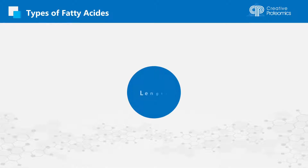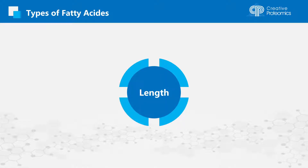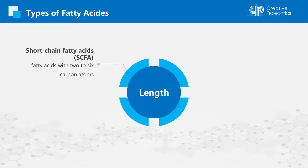According to the length, fatty acids can be classified into different groups. Short-chain fatty acids refer to fatty acids with 2–6 carbon atoms, which are mainly produced when dietary fibers are fermented by the bacterial hydrolytic enzymes produced by gut microflora.